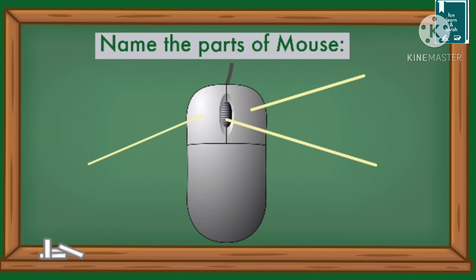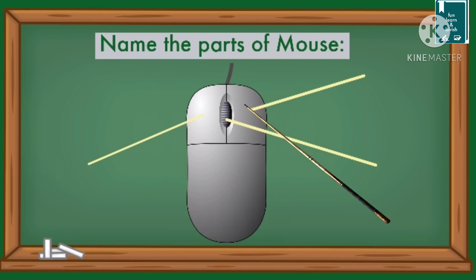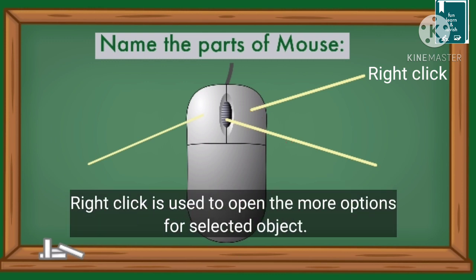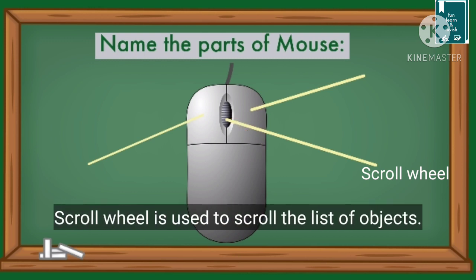Name the parts of mouse. What is this? Left click. Left click is used to select any object. What is this? This is right click. Right click is used to open more options for selected object. What is this? Scroll wheel. Scroll wheel is used to scroll the list of objects.